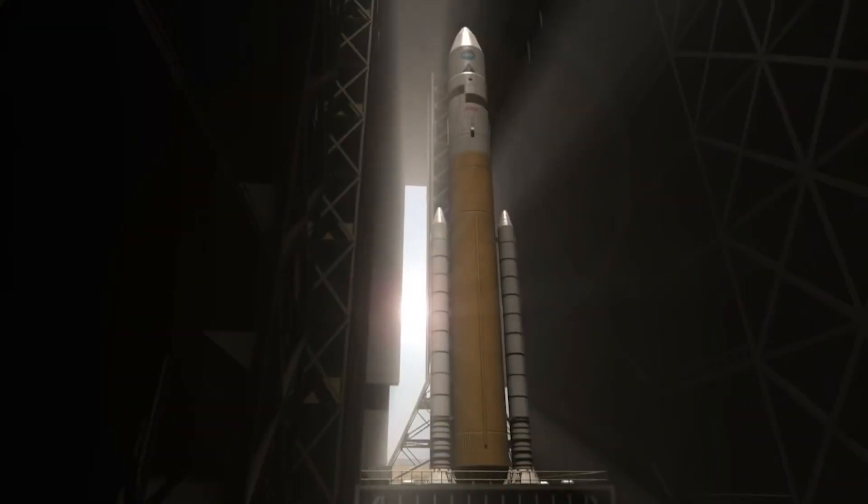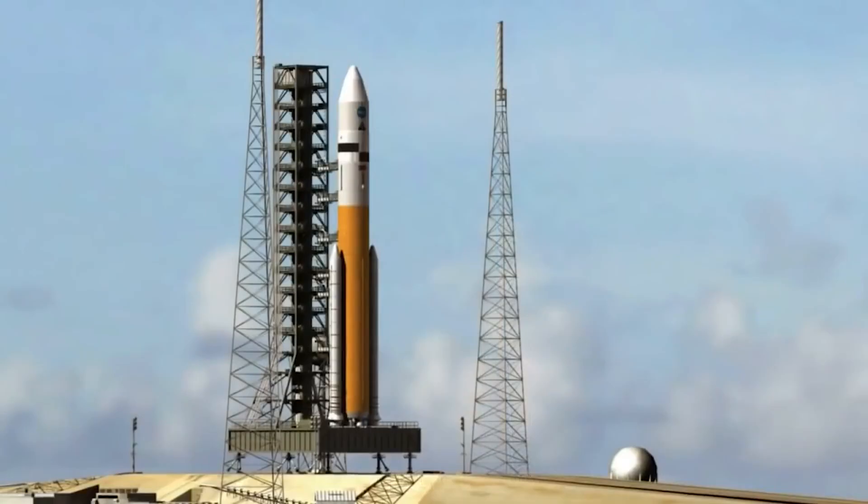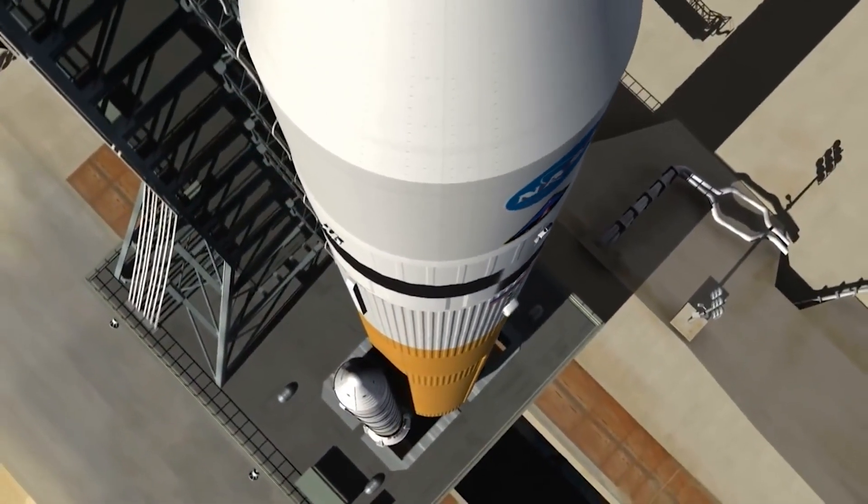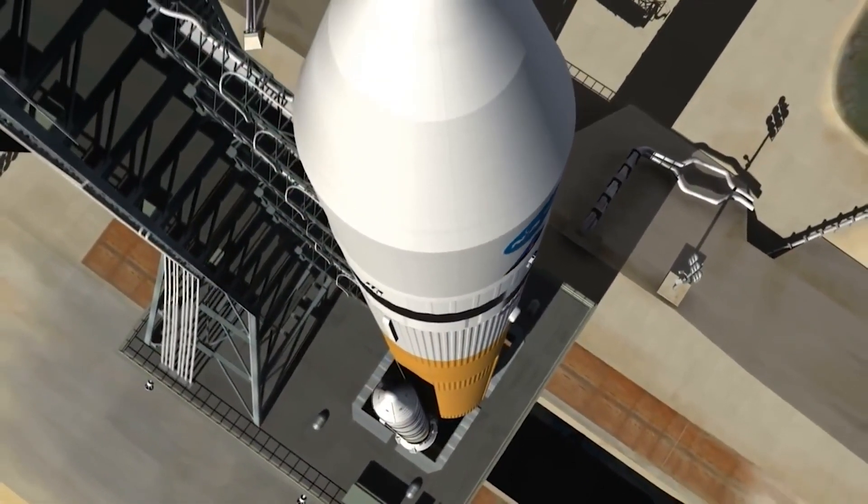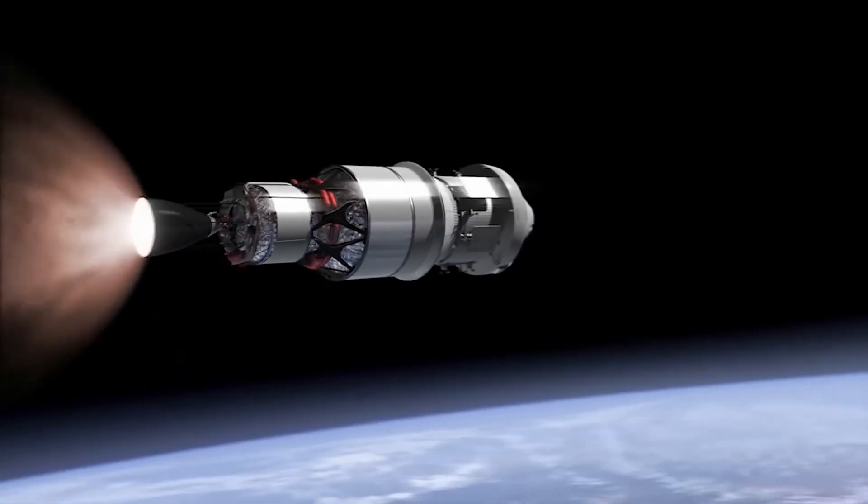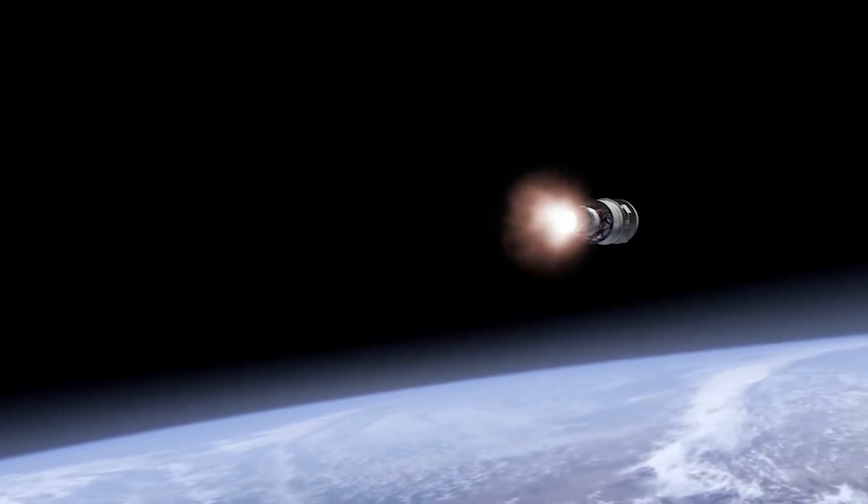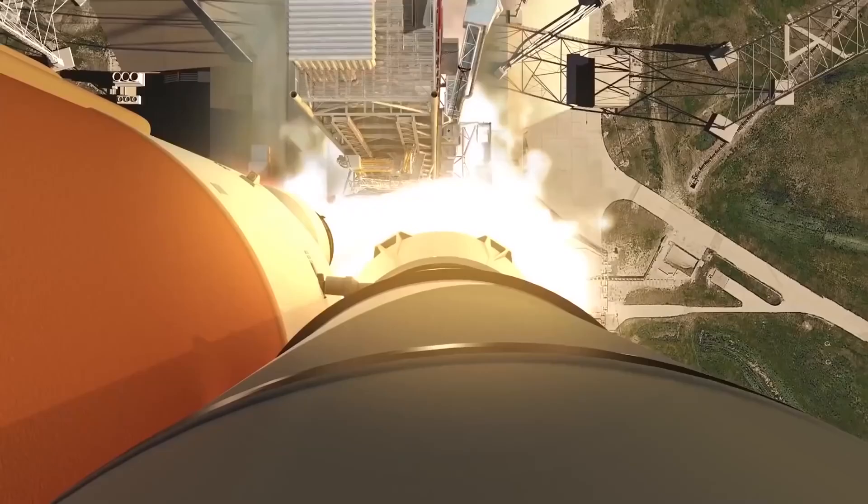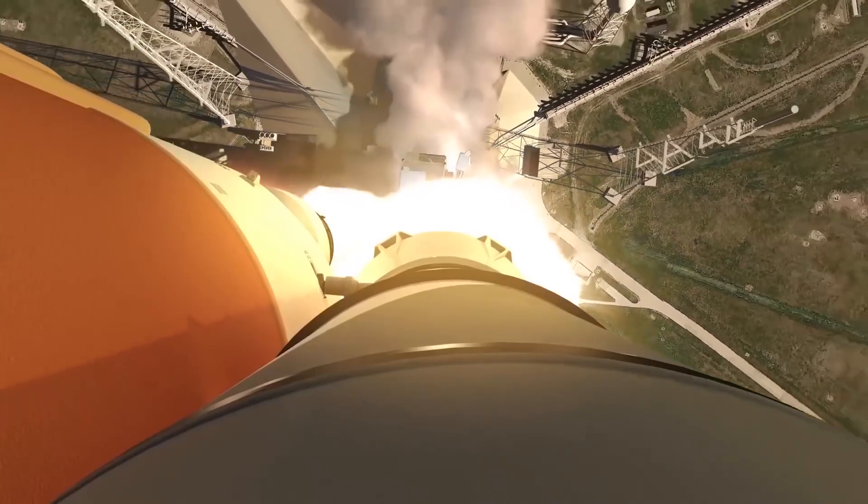At the center of the Artemis program are NASA's new mega rocket, the Space Launch System, and the Orion spacecraft. The SLS is a 322-foot-tall rocket consisting of a core stage, upper stage, and twin five-segment solid rocket boosters to launch a payload into space. For crewed Artemis missions, the rocket will launch the Orion spacecraft to the moon.